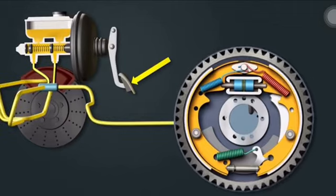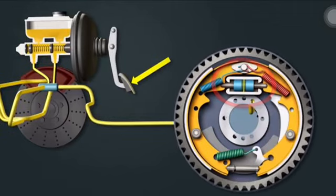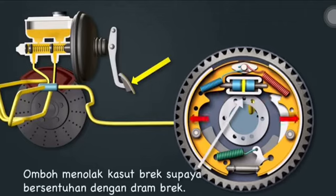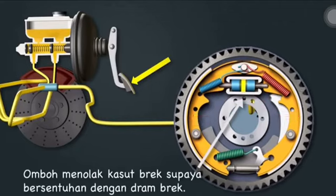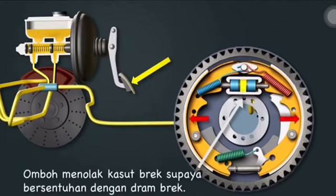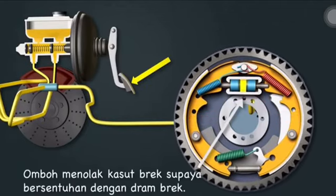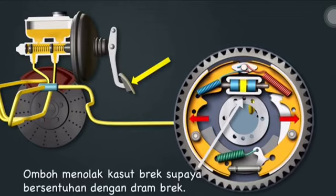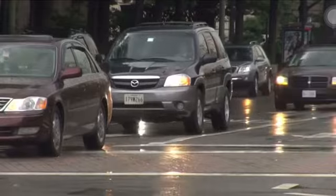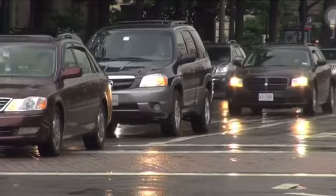Apabila pedal brake ditekan, omboh kecil pada roda belakang juga ditolak. Omboh itu seterusnya menolak kasut brake supaya bersentuhan dengan drum brake. Daya geseran antara kasut brake dengan drum brake boleh memperlahankan kereta sehingga berhenti.